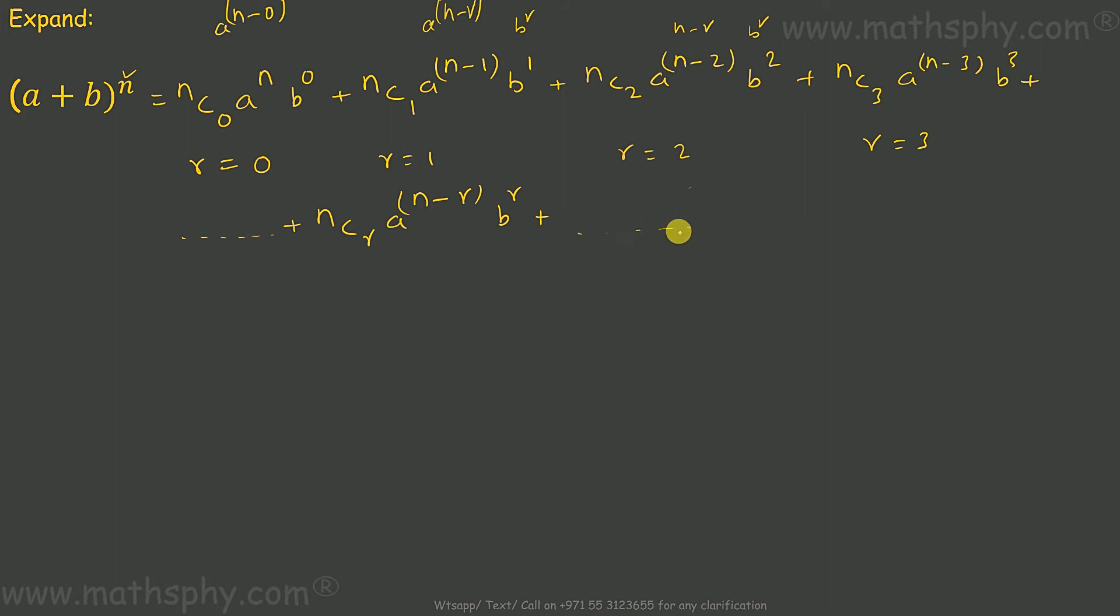And then, it will keep moving, plus, till it reaches, r becomes n, then a raised to n minus n, or a raised to 0, the last term, b raised to n here. This is what a plus b raised to n, expansion, talks about.